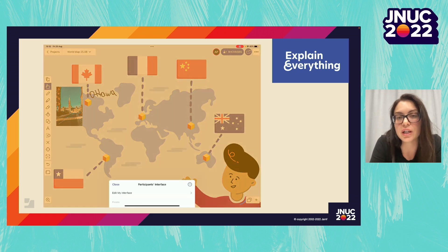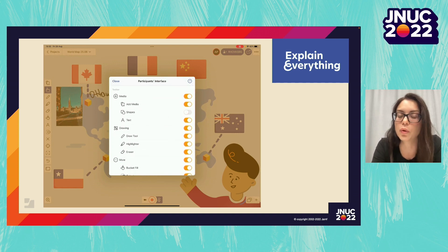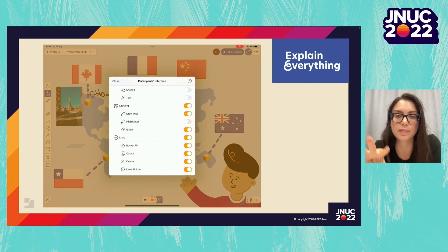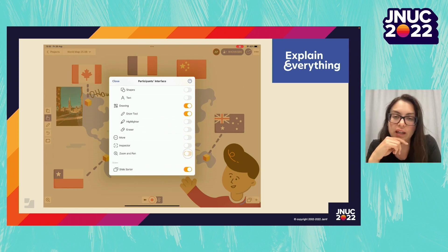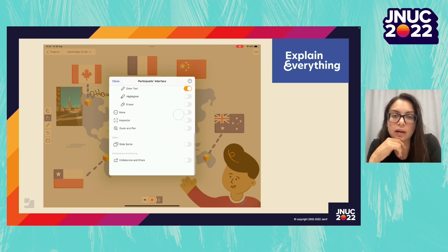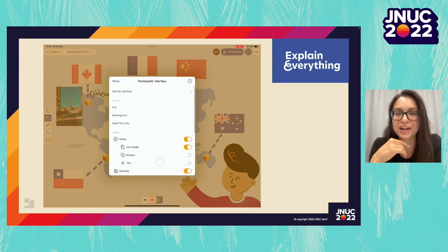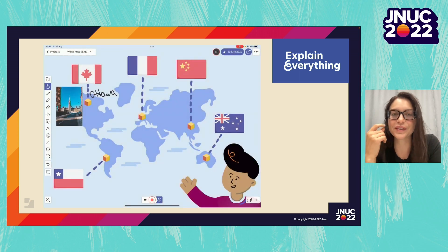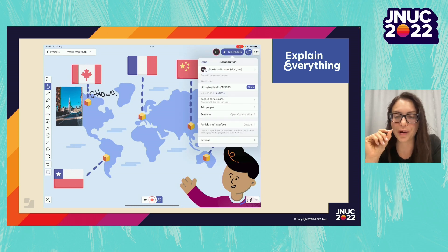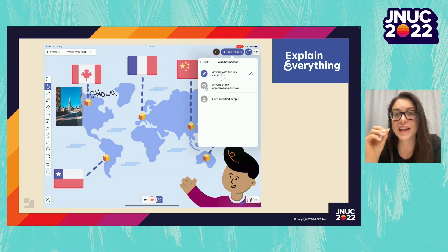Explain Everything is highly customizable. If you only want to give students access to certain tools, you can edit the participants' interface. For example, if you only wanted them to write and add pictures, you could leave them with just those two functionalities — depending on how much trust you have for your students, or if you don't want them distracted. You can edit the toolbar to control exactly what they can and can't do.